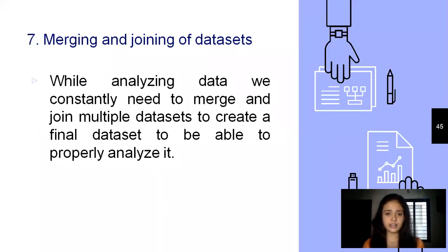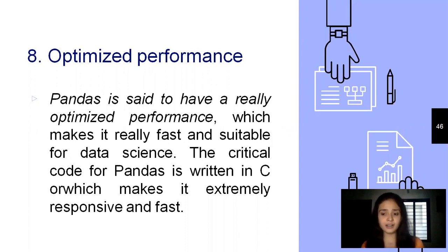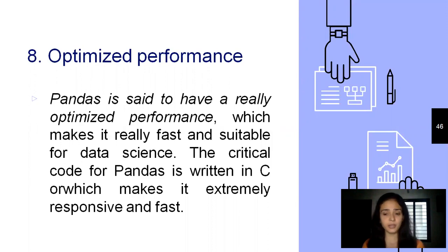Pandas can do merging and joining of data sets. It might happen that there are two different data sets and for analysis purposes you want to join them — the merging and joining functionality is provided by pandas. Then comes optimized performance. The critical code for the pandas library is written in C language, which makes it extremely responsive and fast. This pandas library is used in Python but originally it is written in C, so it gives optimized performance.